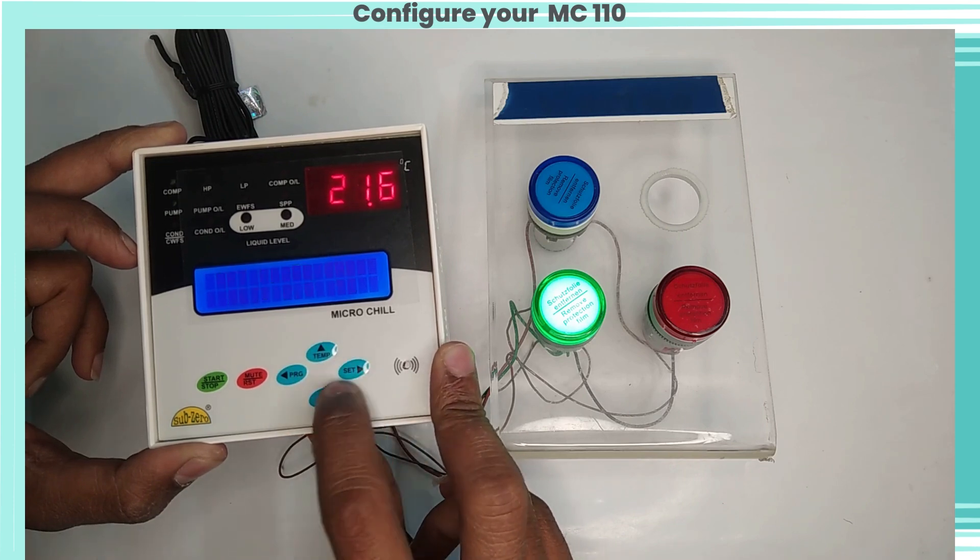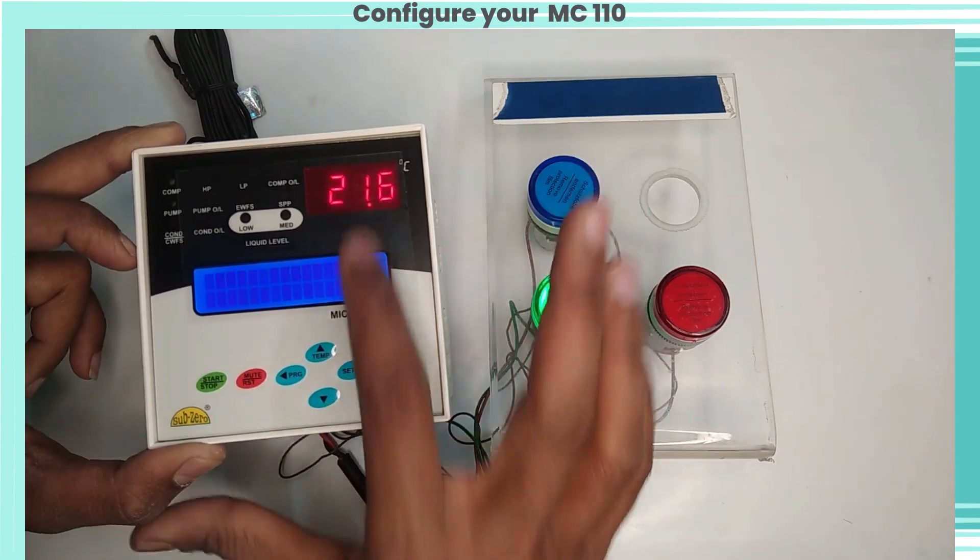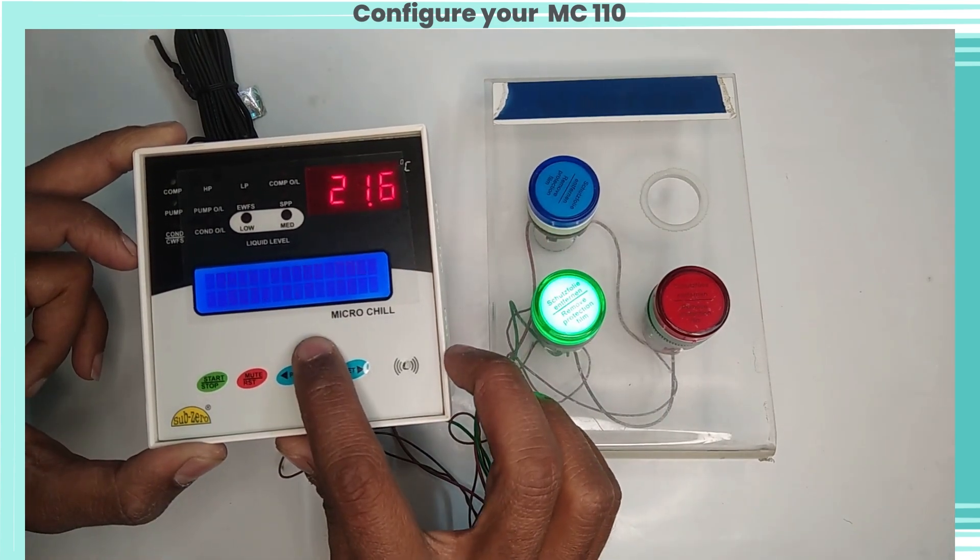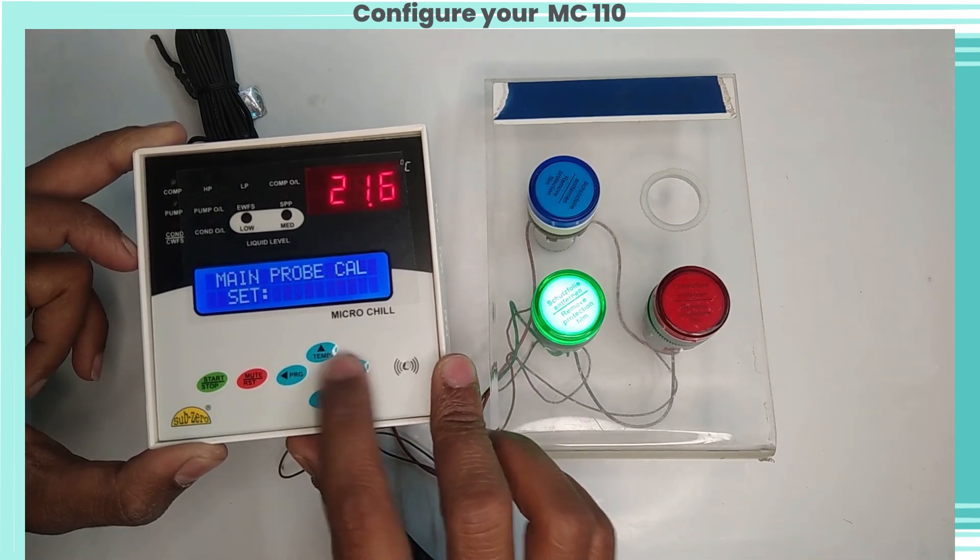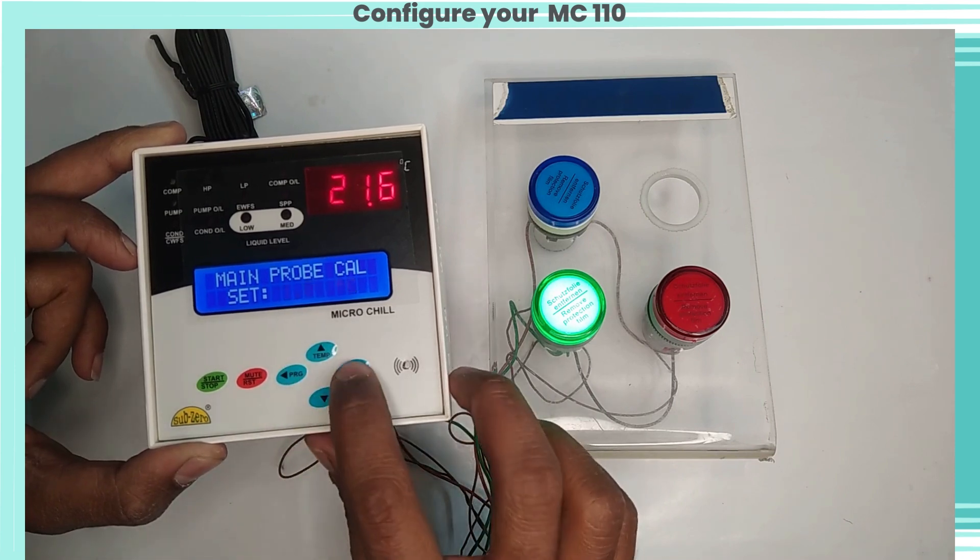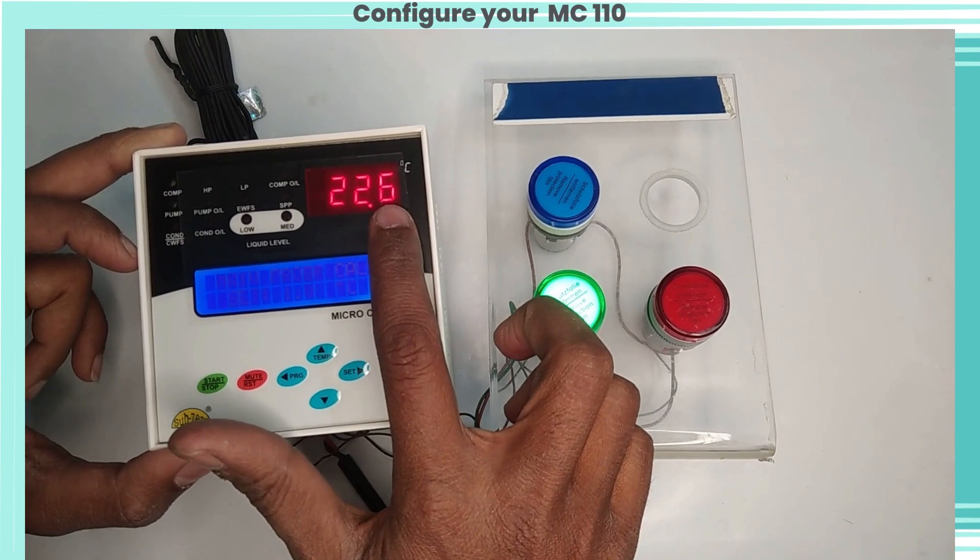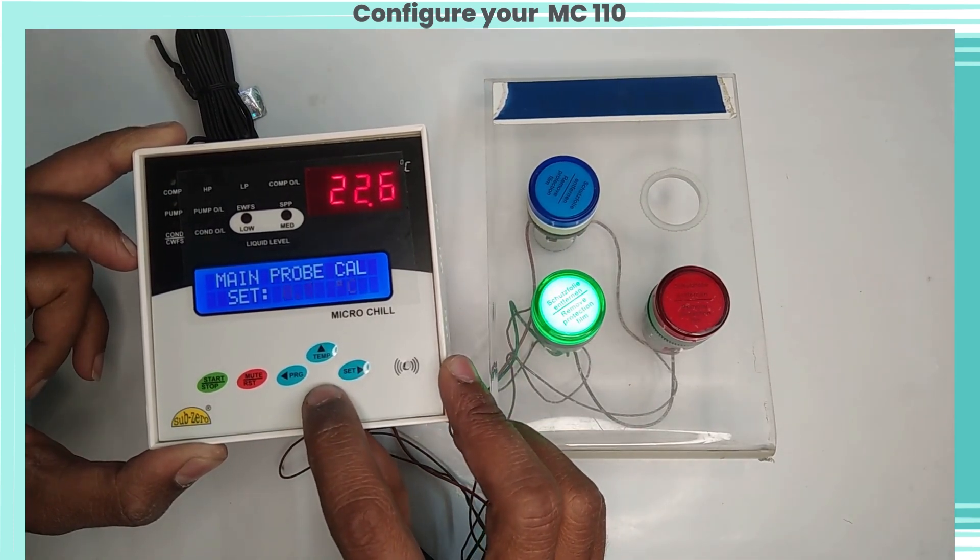For example, if the actual temperature is 20.0 degrees Celsius and the temperature on the controller shows 22.0 degrees Celsius, set this parameter to minus 2.0 degrees Celsius. And once out of this mode, the temperature will display 20.0 degrees Celsius.